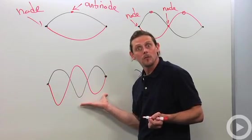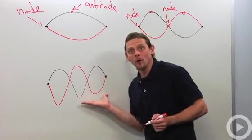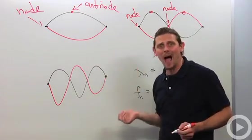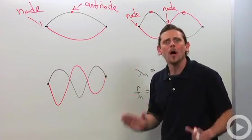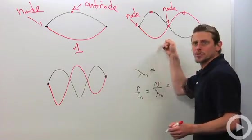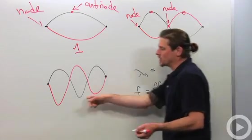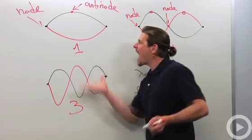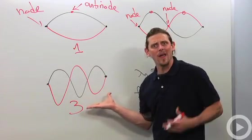There it is. So in general, when we do this, we're going to count. And we usually count by just counting the number of anti-nodes. So this is going to be one. This one's going to be two. This one's going to be three. And now let's try to determine the wavelength.